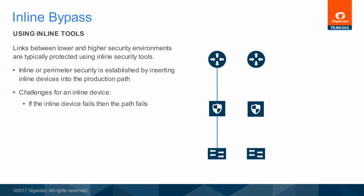First, as just mentioned, if the inline device experiences a failure, then the production link is usually brought down. The failure could be as simple as a failed fan, or it could be more serious, like a bad power supply. Often, the inline tool must be removed and replaced, or cabled around in order to restore operation of the production path.